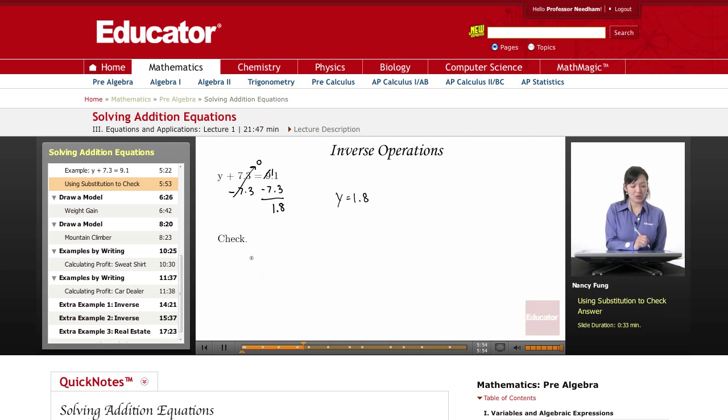Let's go back and check our answer using substitution. So in place of the y here, I'm going to put a 1.8. 1.8 plus 7.3 equals 9.1. If we did it correctly, the answer should be 9.1 when I add these two numbers. So I'm going to add my decimals by lining up the decimals. 8 plus 3 is 11, 7, 8, 9.1. Yes, it does work out. So y equals 1.8.